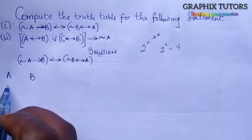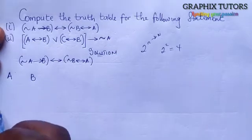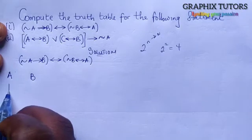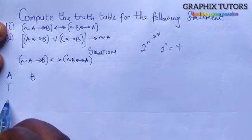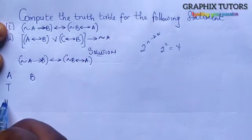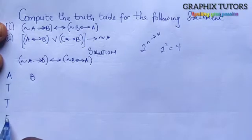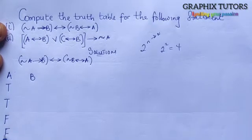Since we have four rows, I'll divide column A into two halves, starting with true. So the first two rows of A are true and the next two are false.